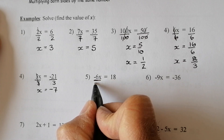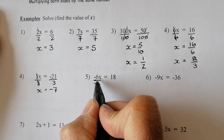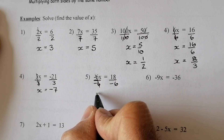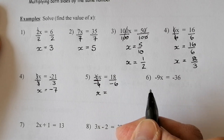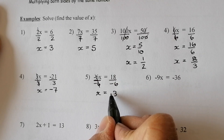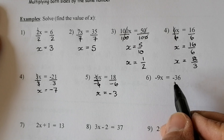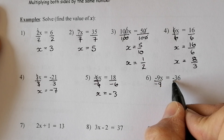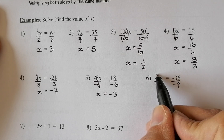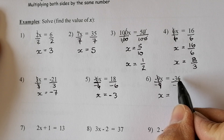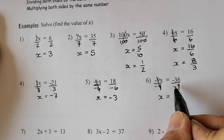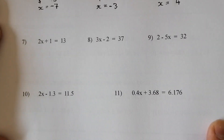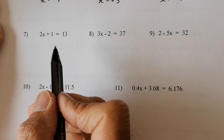Question 5: negative 6x equals 18. I divide each side by negative 6. The two negative 6s cancel, leaving x on its own, and 6 into 18 goes three times — with only one negative sign that gives negative 3. Question 6: negative 9x equals negative 36. Divide both sides by negative 9. The negative 9s cancel, leaving x equals 36 divided by 9 which is 4, and with two negative signs that gives a positive answer. So x equals 4.